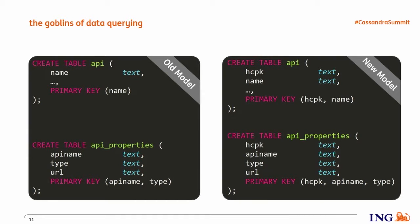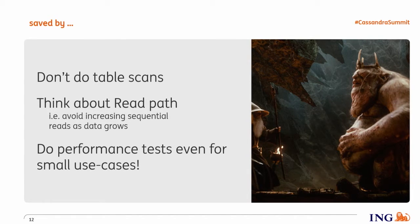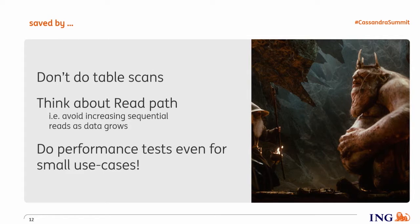What did we learn from this use case? Don't do table scans — you may have heard it in training, and we can confirm it. Think about read patterns. Think about sequential writes like the ones we saw here. Even if your use case is very small, it's highly recommended to do a performance test. They only went to three to five hundred APIs — not much — but it always killed the complete performance of the whole application. We really applaud this team because they were mature enough to do the performance test, even for an internal use case.